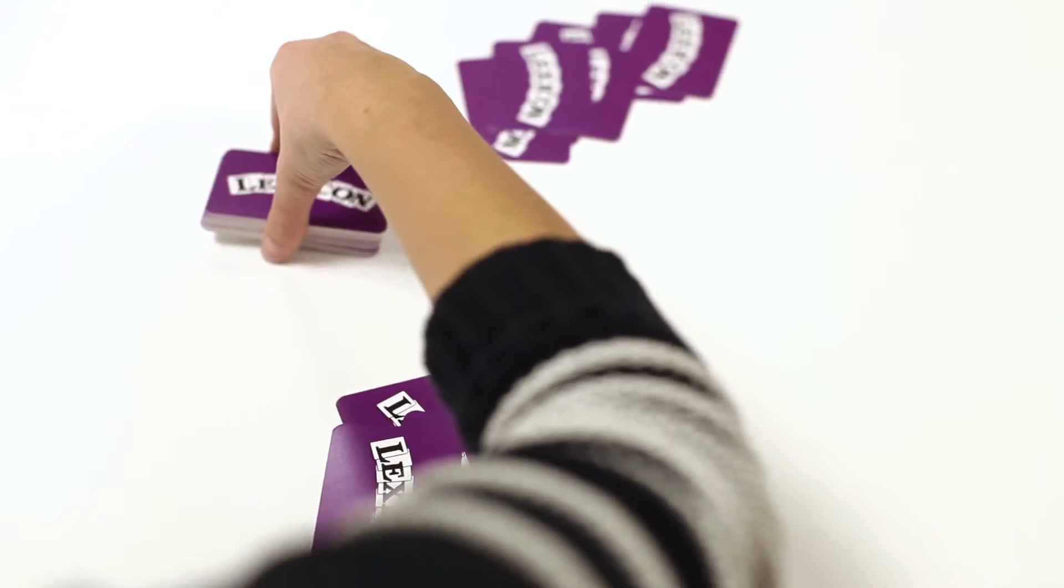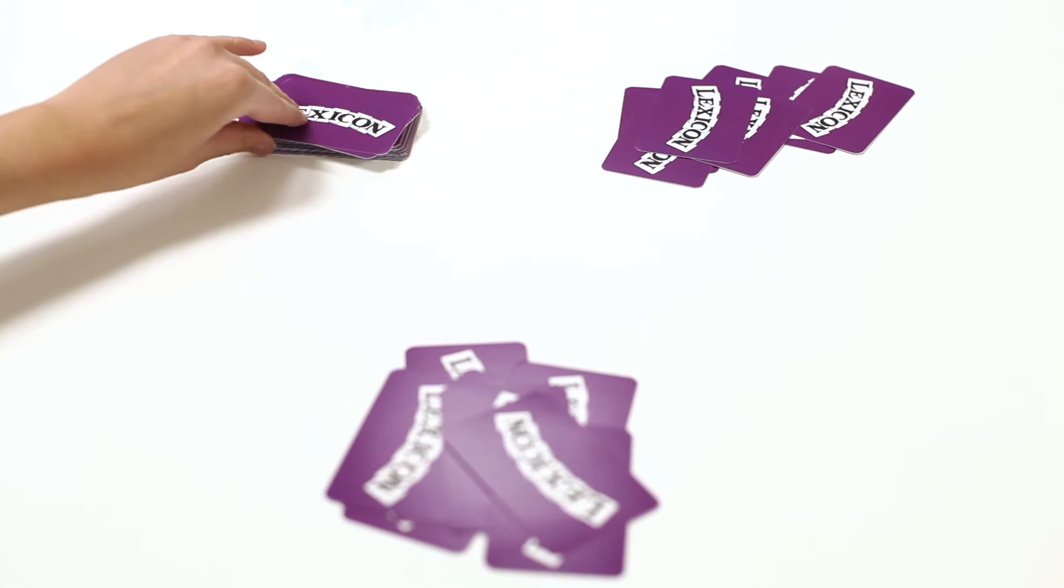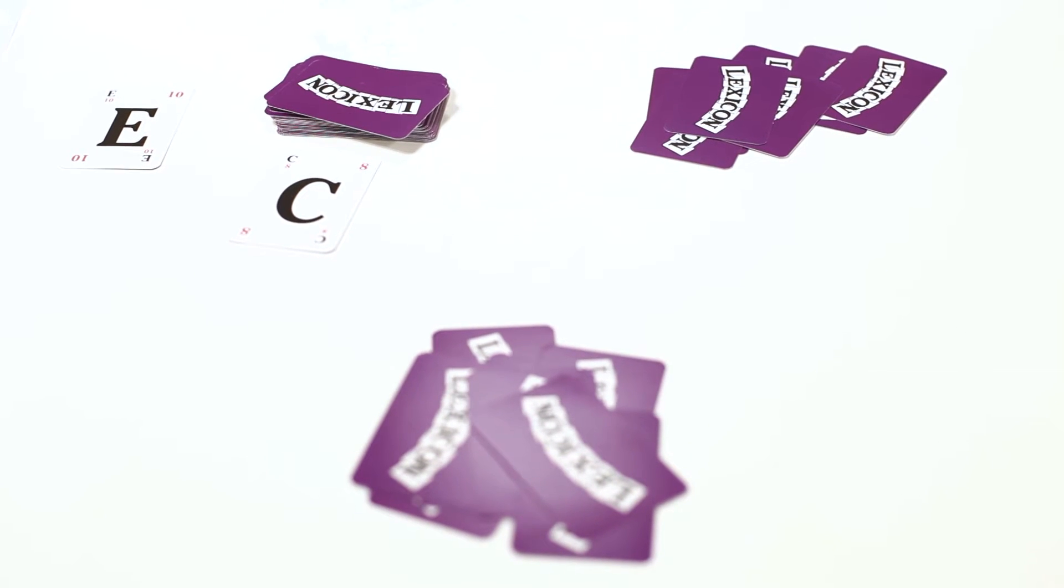The remaining cards are placed face down next to the dealer. The top card is taken and placed face up to the left of the pile. Then a second card is taken and placed face up to the centre of the table.